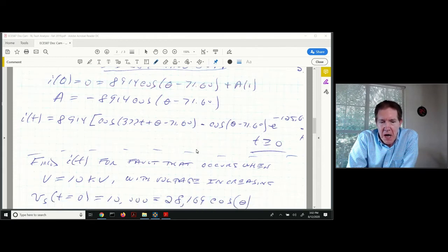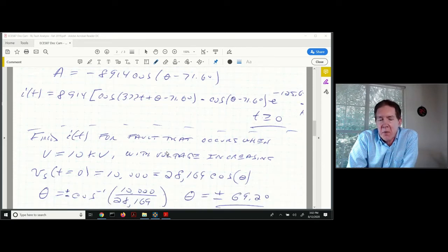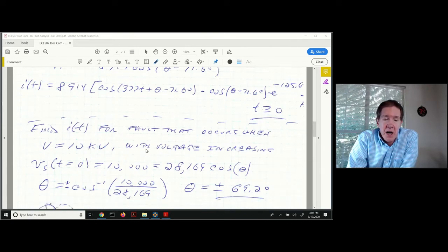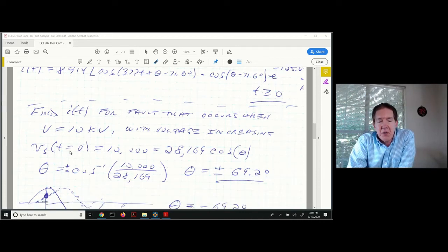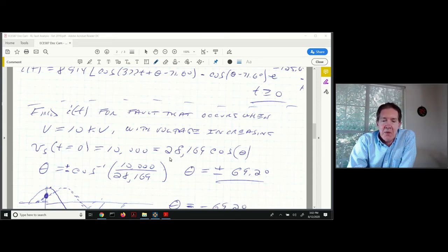How do I work in what theta is going to be? I've got another condition that says I want to figure out what this fault current is if the fault occurs when the source voltage is 10 kV with voltage increasing. This is a zero peak value when this voltage is actually increasing. At time equals zero, I take that source voltage and set that equal to 10,000. We had a peak value of 28,169. At time equals zero, I have cosine of theta, and I need to solve for theta.